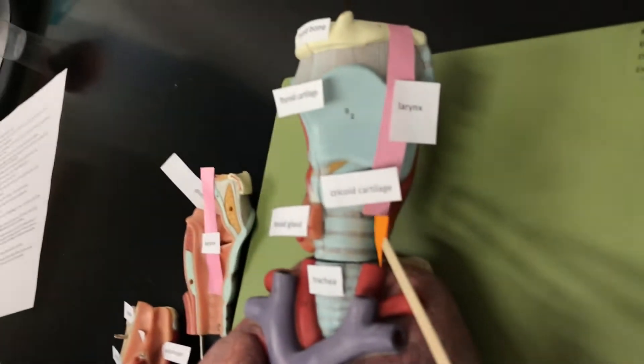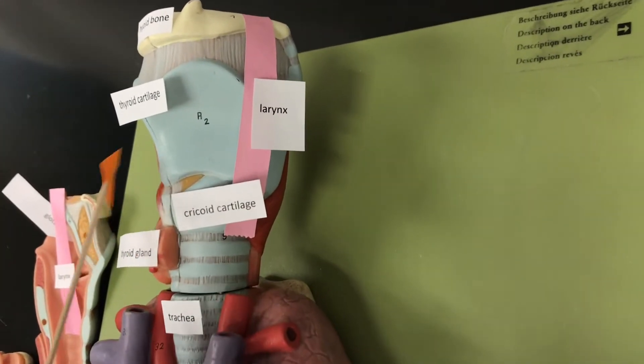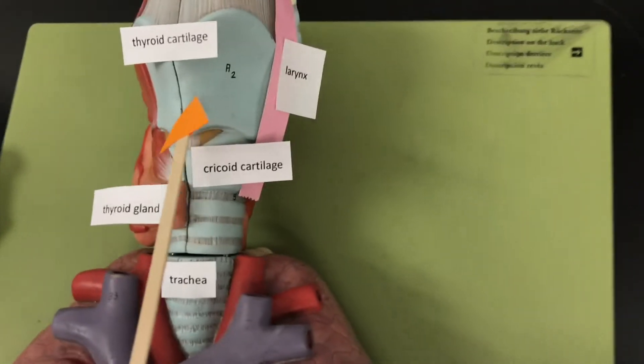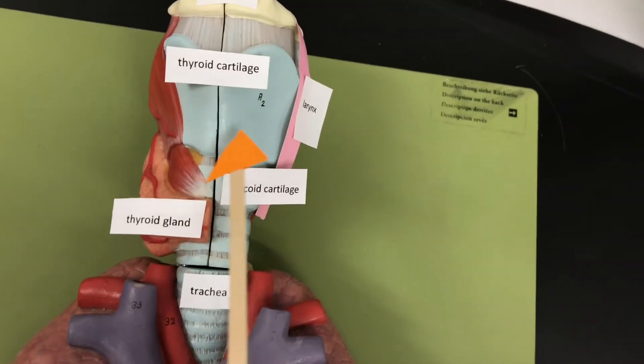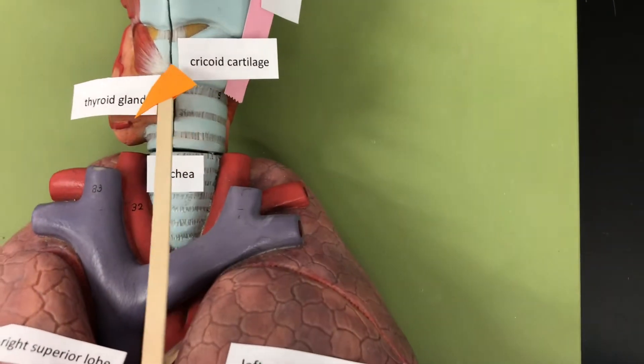So the larynx, that's this region here, has nine pieces of cartilage. And on this model we can see here's the thyroid cartilage. It's shaped like a shield and it's often called the Adam's apple. Here's the cricoid cartilage, and it is ring-shaped.